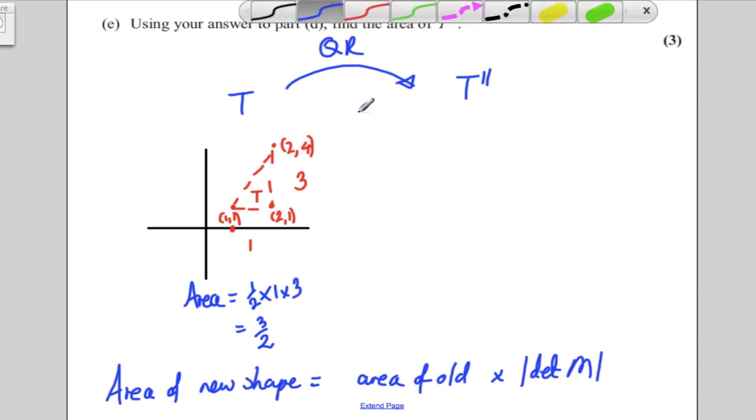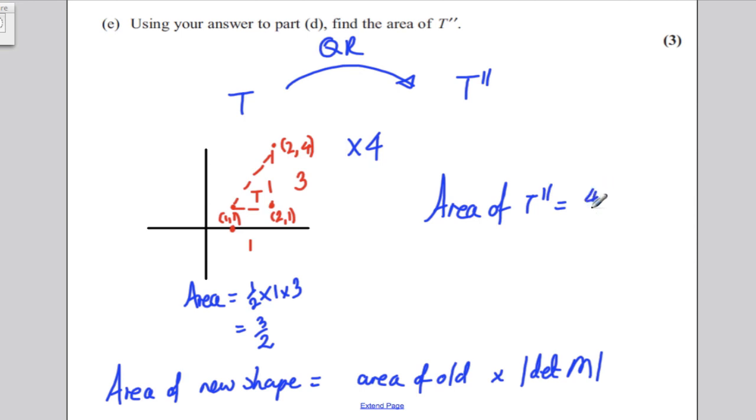Now, the matrix QR has determinant 4, or negative 4, and we take the positive of that. So, basically, it's telling us that we're enlarging by size 4. So, therefore, the area of T double prime must be 4 multiplied by 3 over 2, which is actually 6 units squared. And that's it for your 3 marks.